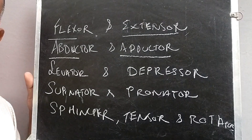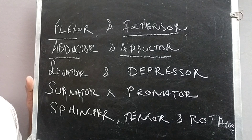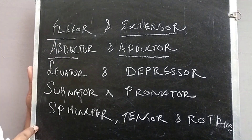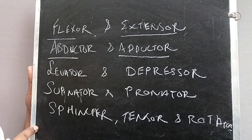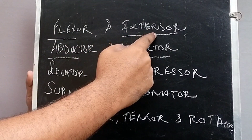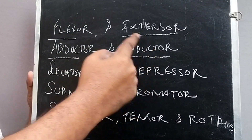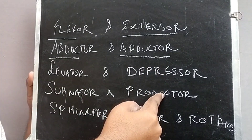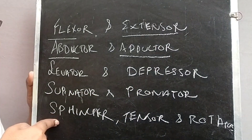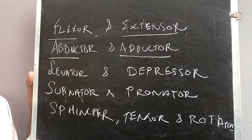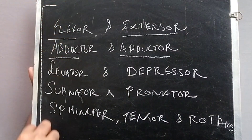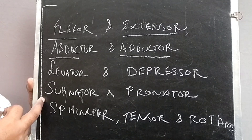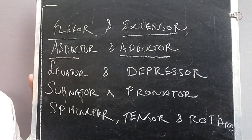According to the action made by the skeletal muscle, we can classify the muscle into different types. These types are: flexor, extensor, adductor, abductor, levator, depressor, supinator, pronator, sphincter, tensor, and rotator. These are all the muscles classified under the skeletal muscle system, particularly classified on the basis of their action.